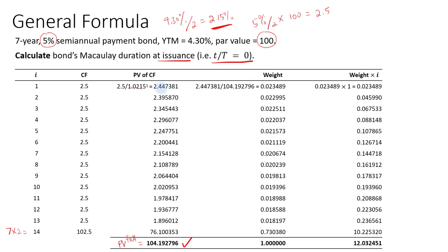Next, we convert the PV of each cash flow into its weight. For period 1, we take 2.447381 divided by the total PV of 104.192796 to get the weight, and repeat for all periods. As you can see, the final period — which includes the face value — will have the highest weight.